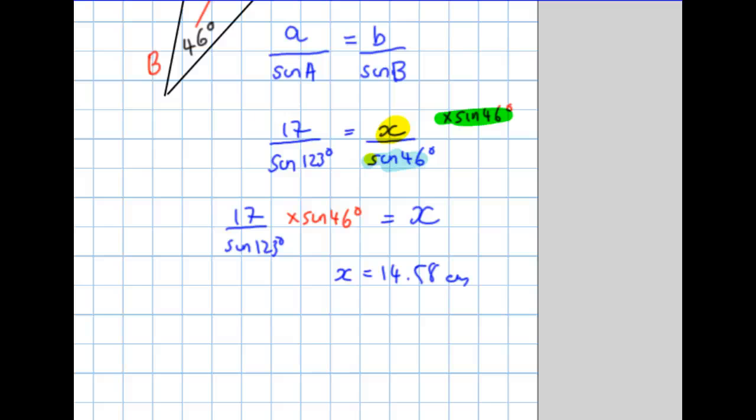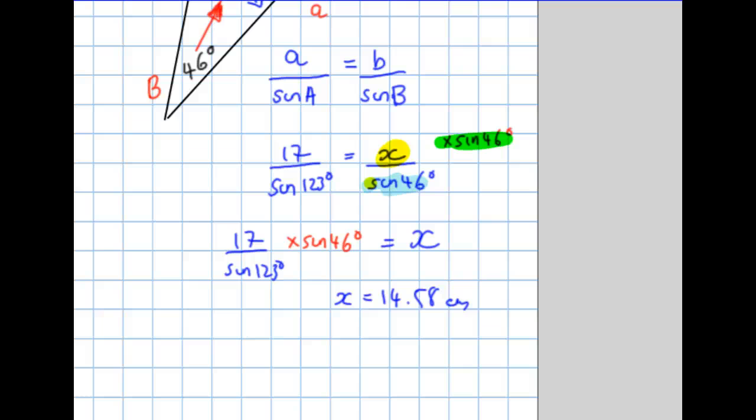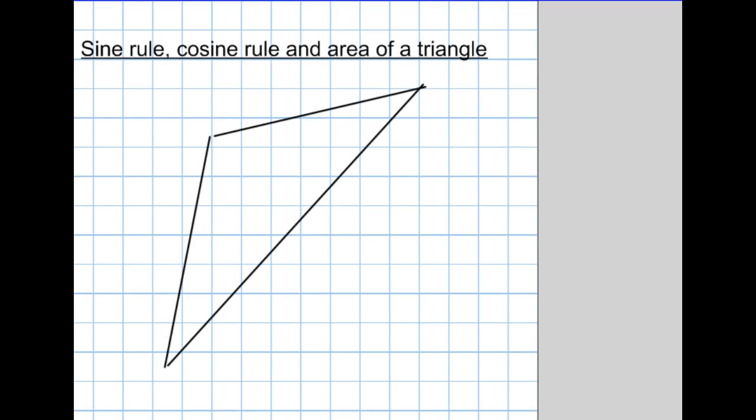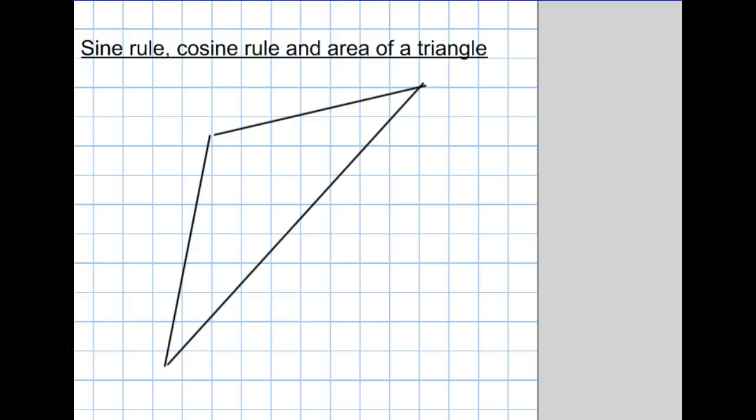say you're trying to find angles, say the question was slightly modified, say your question had been this, and you were trying to find the angle, then we'd use the alternate form of the sine rule. You'd use sine uppercase A over A equals sine B over B. And in fact, I may as well run through that.